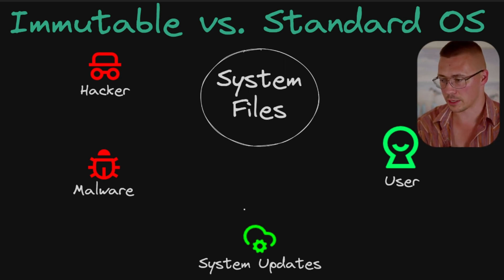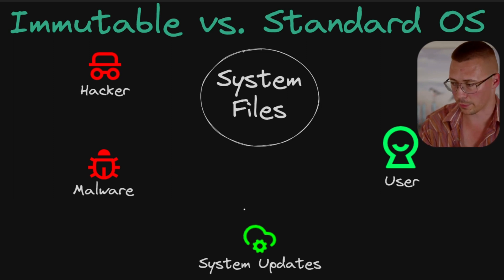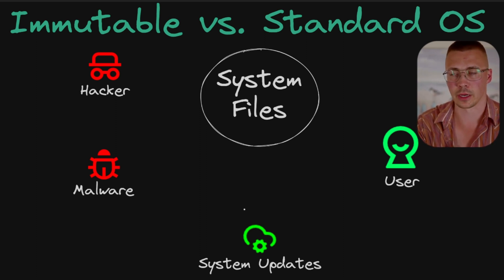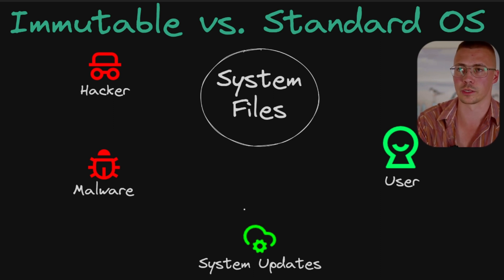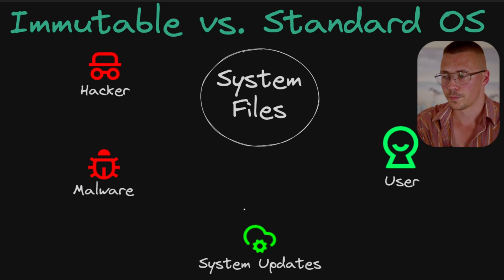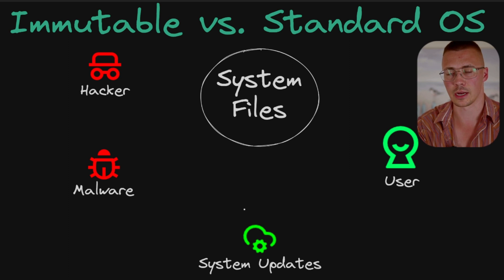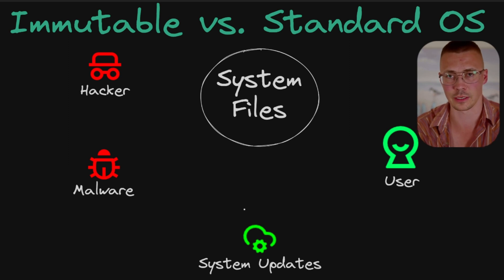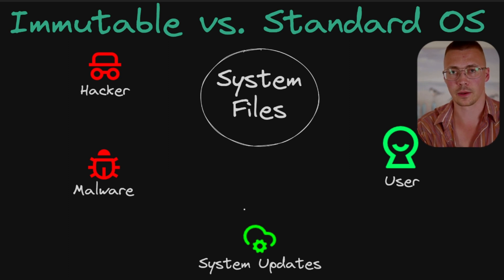Like anything else in life, everything has its pros and cons, nothing's ever perfect, but immutable operating systems are really great. I think they're going to be the way of the future. Right now Windows doesn't have that option — the closest you could get is having your computer set to the secured-core PC standard, but even then it's not actually immutable. You could still very easily get an infection, whereas it's somewhat more difficult with immutable operating systems.